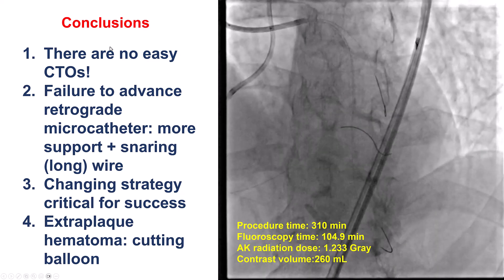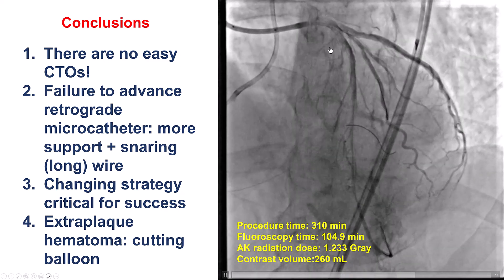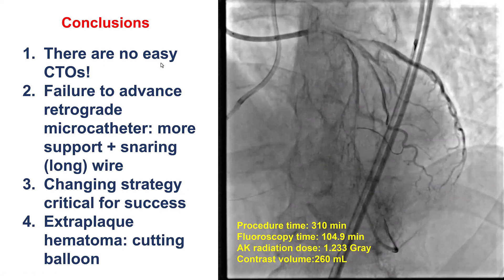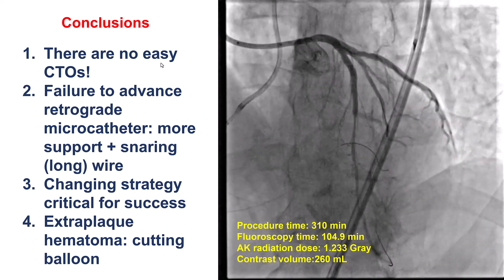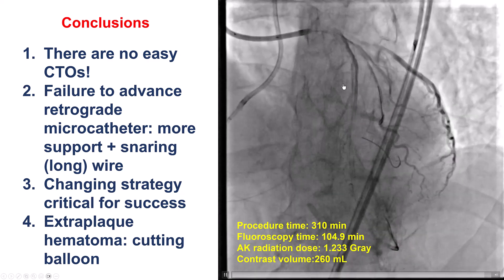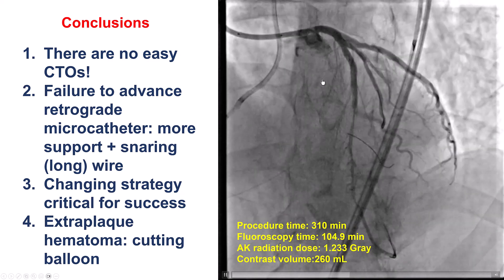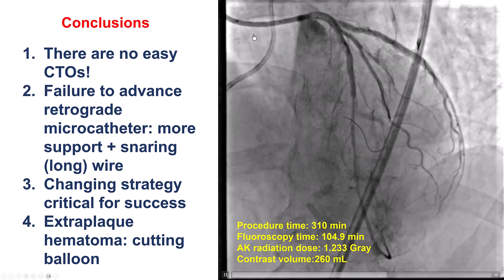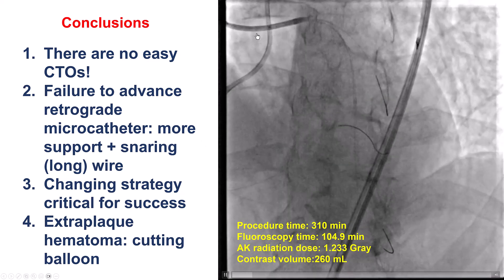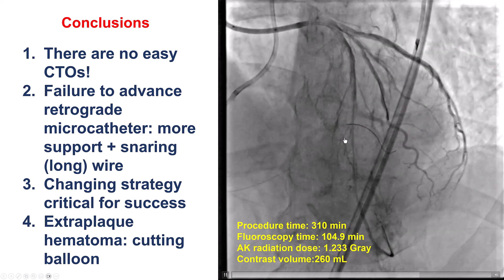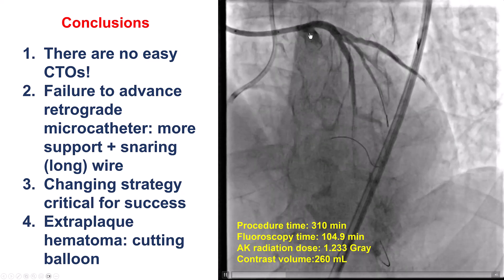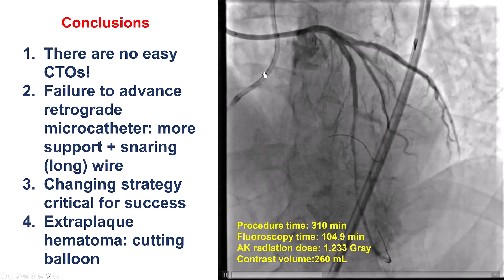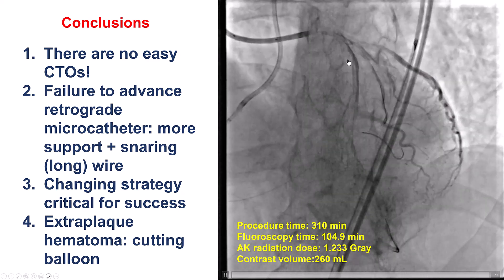Multiple lessons from this case. First, although it seemed to be a simple CTO, it ended up being fairly complex — there is no such thing as an easy CTO. One should always approach even apparently simple cases with caution, because they can quickly turn more complex. Second, we encountered the situation of retrograde wire crossing but the microcatheter unable to cross. Solutions include more support via a guide extension, anchoring the retrograde wire into the antegrade guide catheter, using a different microcatheter, or ballooning. In our case, snaring the retrograde 300 cm wire provided enough support for the retrograde microcatheter to cross into the LAD, allowing externalization.